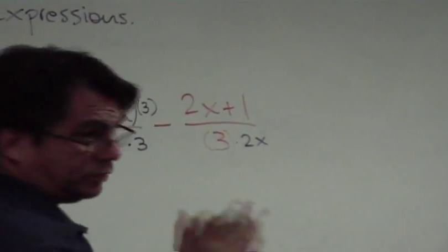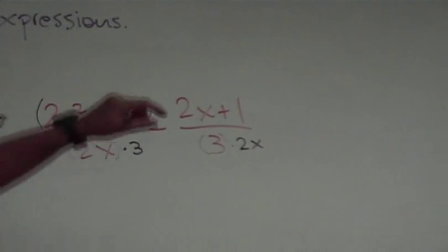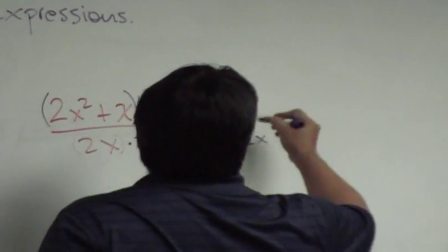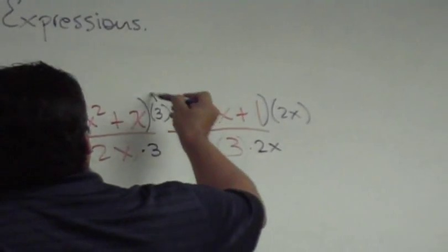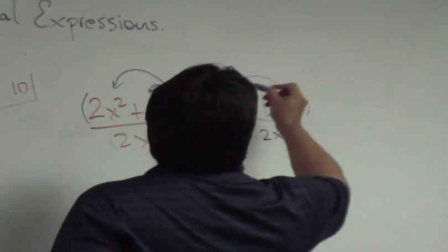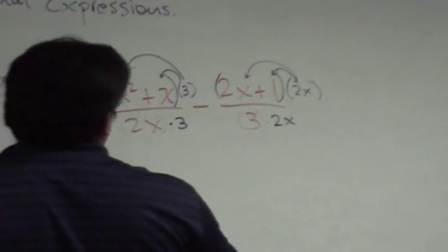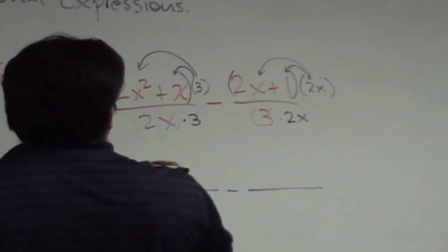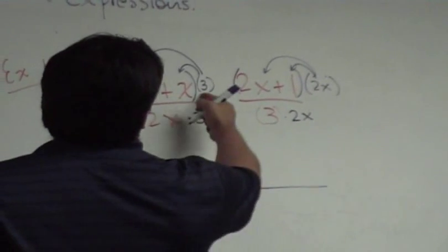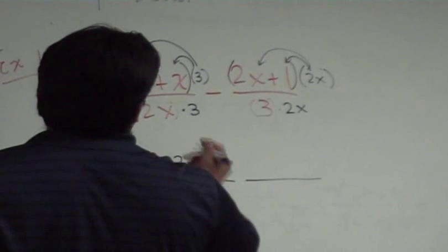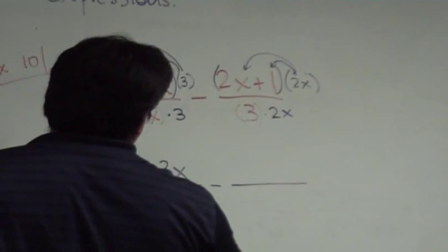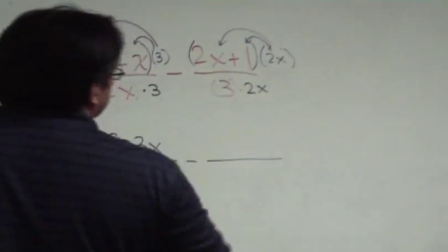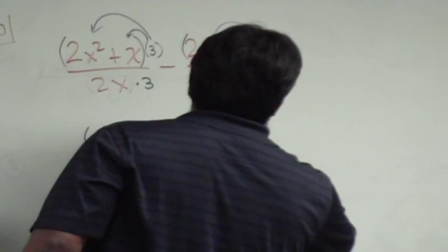Would it be wrong to put the 3 on the front? No — it would be perfectly okay, because multiplication is commutative. You can multiply 3 on either side and get the same answer. Now, what do I need to multiply this numerator by? 2x. And as we did before, we need to multiply this out. 3 times 2x² is 6x², 3 times x is 3x. The denominator is 2x times 3, which you can write as 6x if you like.